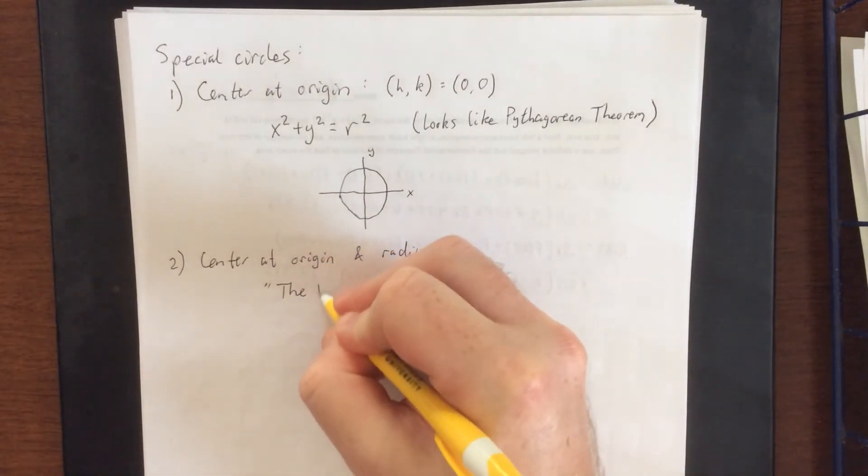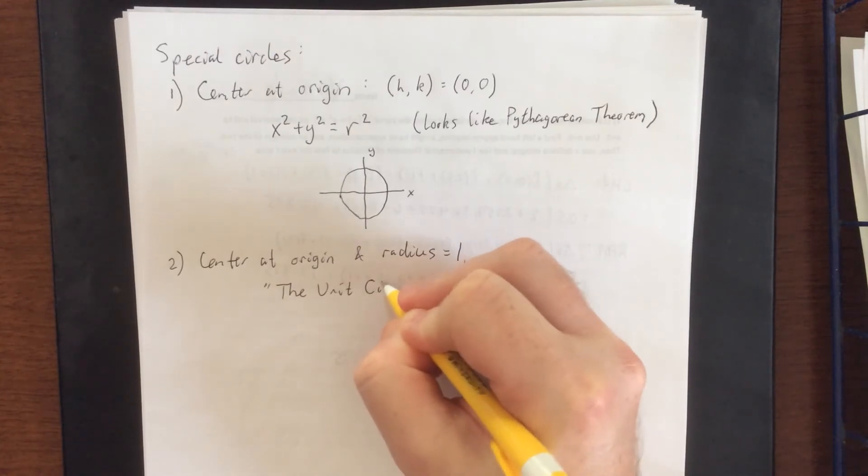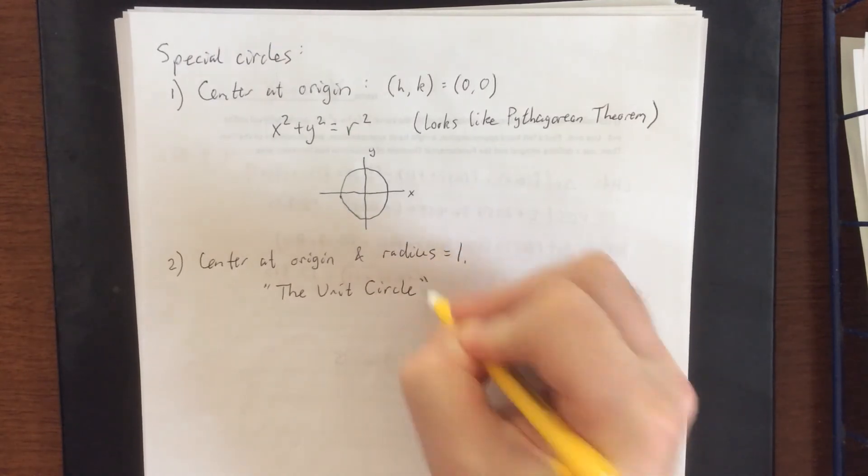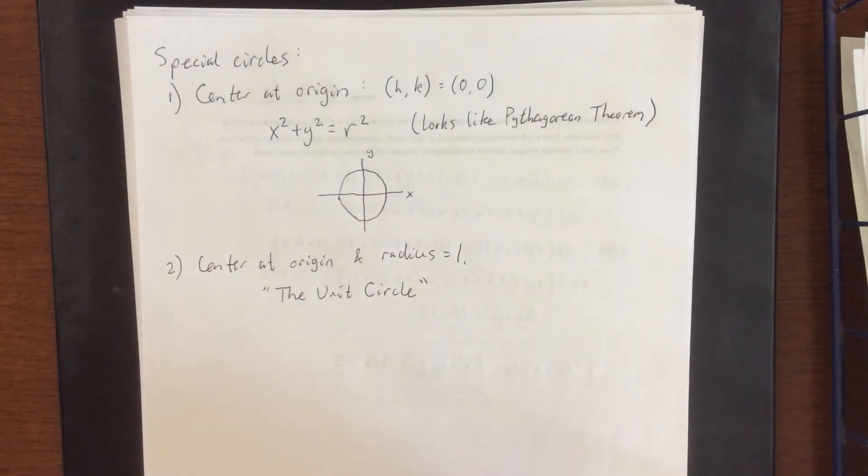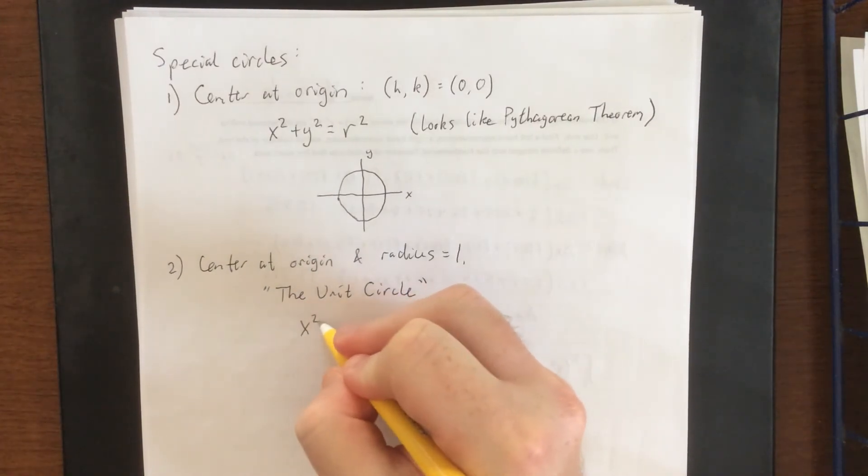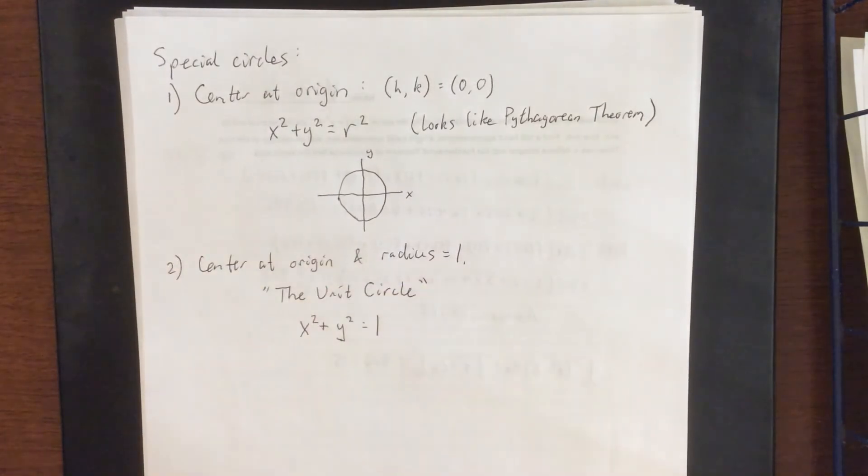Anytime the number 1 shows up in the mathematical world we tend to see the word unit associated with that. This one's referred to as the unit circle and it has the equation x squared plus y squared is equal to 1.